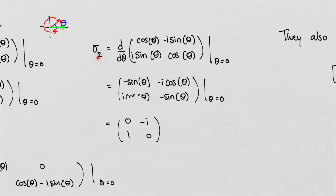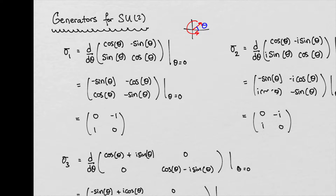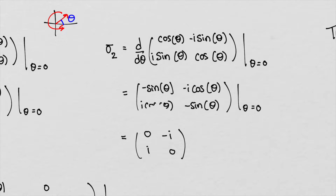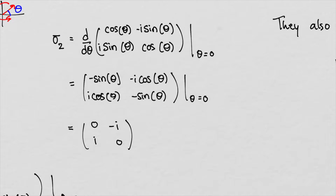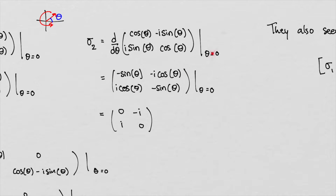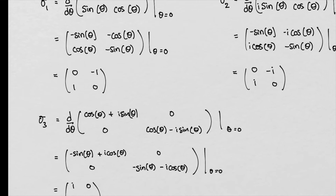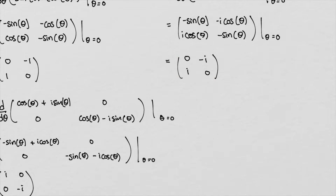The sigma 2 matrix, the second Pauli matrix, looks like this. We have these i's now — these imaginary units. These i's don't really change anything because this is just in the complex plane. The i's don't change the derivative. So for sigma 2, we put theta equal to zero and we get this. So this is our second Pauli matrix. One is a rotation in real space, the other one is a rotation in complex space.